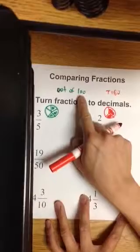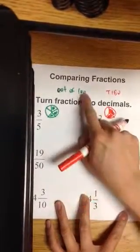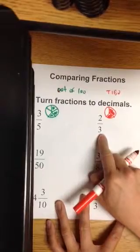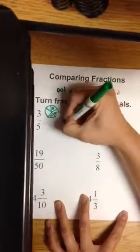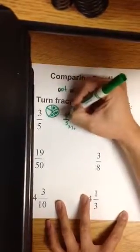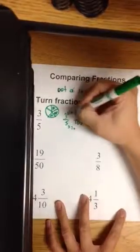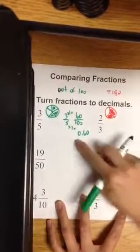So let's see. 3/5. Can I go into 100? I think I can. Can 2/3 go into 100? No, I think we're going to use division. Let's start with the first one. 3/5. Can I go into 100 out of 100? Yes. You multiply by a scale factor of 20, and you get 60 hundredths, or 0.60.